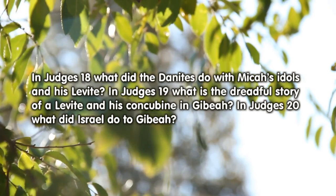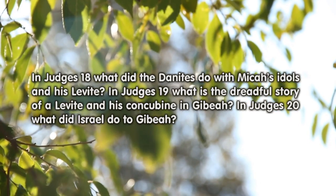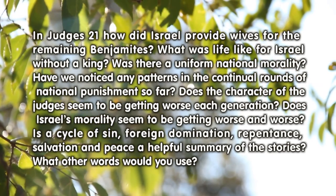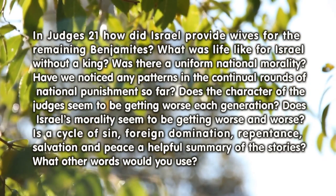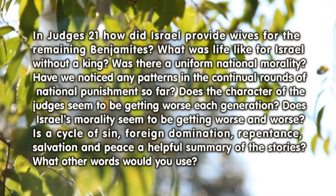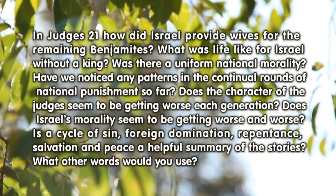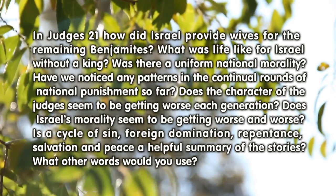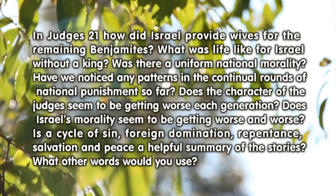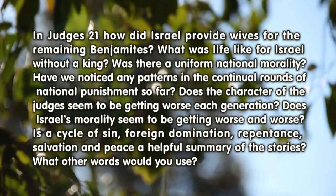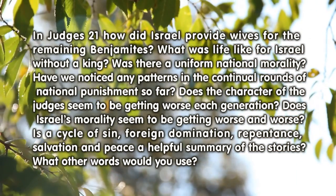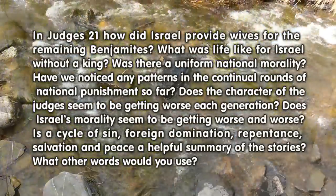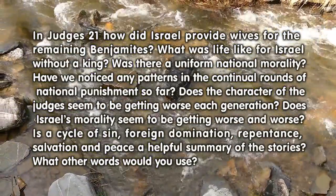In Judges 20, what did Israel do to Gibeah? In Judges 21, how did Israel provide wives for the remaining Benjamites? What was life like for Israel without a king? Was there a uniform national morality? Have we noticed any patterns in the continual rounds of national punishment so far? Does the character of the judges seem to be getting worse each generation? Does Israel's morality seem to be getting worse and worse?